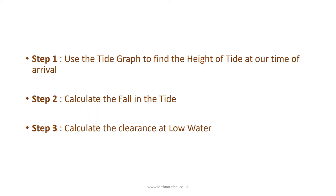To find this out, we need to follow three simple steps. Step 1: use the tide graph to find the height of tide at our time of arrival, 14:33. Step 2: calculate the fall in the tide from the time we arrive to the next low water. And Step 3: calculate the clearance that we will have at the next low water.